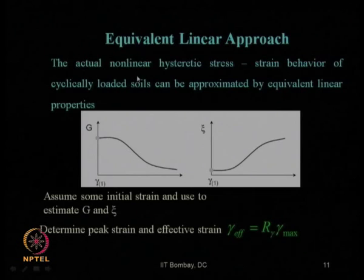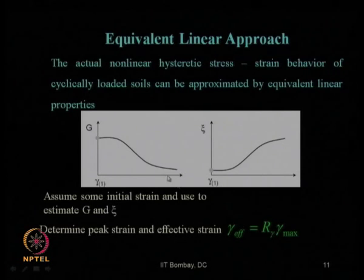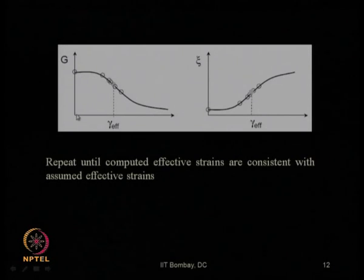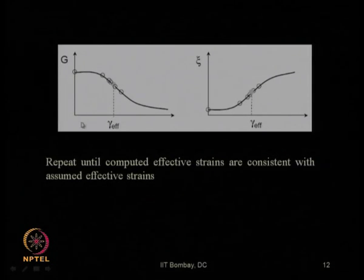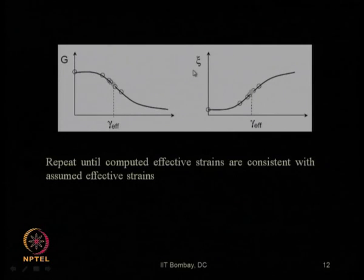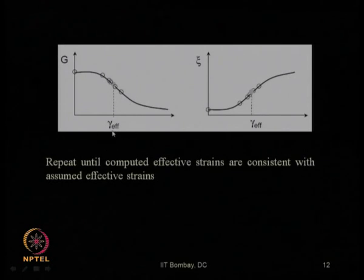Then we also discussed how to carry out the equivalent linear ground response analysis. The modulus reduction curve — G by G_max ratio — varies over cyclic shear strain when we consider the secant modulus, and the damping ratio varies with respect to cyclic shear strain. We need to choose an initial value of cyclic shear strain to start the analysis, and repeat the trial-and-error iterative procedure until the assumed strain and the final output strain match, finally obtaining the effective gamma.